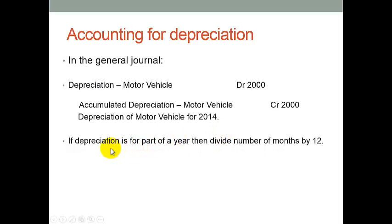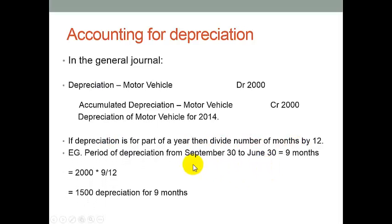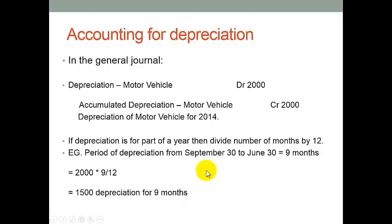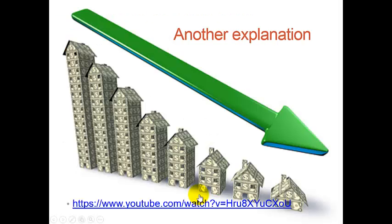Sometimes we have depreciation which is only for part of a year, so we divide the number of months by 12. For example, if the period of depreciation runs from September the 30th to June the 30th of next year, that equals 9 months. So it would be $2,000 — the yearly charge — times 9 divided by 12, giving $1,500 depreciation for the 9 months. We have to apportion it over the shorter period of time. This clip will be available on my blog for you to peruse as well.